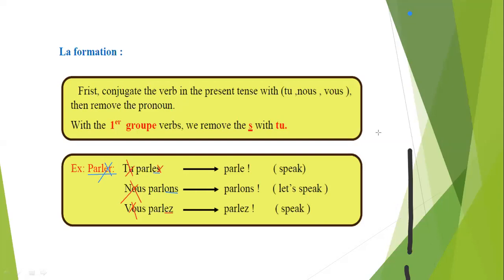Parle means I'm talking to one person only. Parlons means I am with you, I am included — let's play football, let's speak English, let's speak French, let's learn science. Parlez means you will speak and I will not. This is the difference between the three persons. Now let's see the next slide.